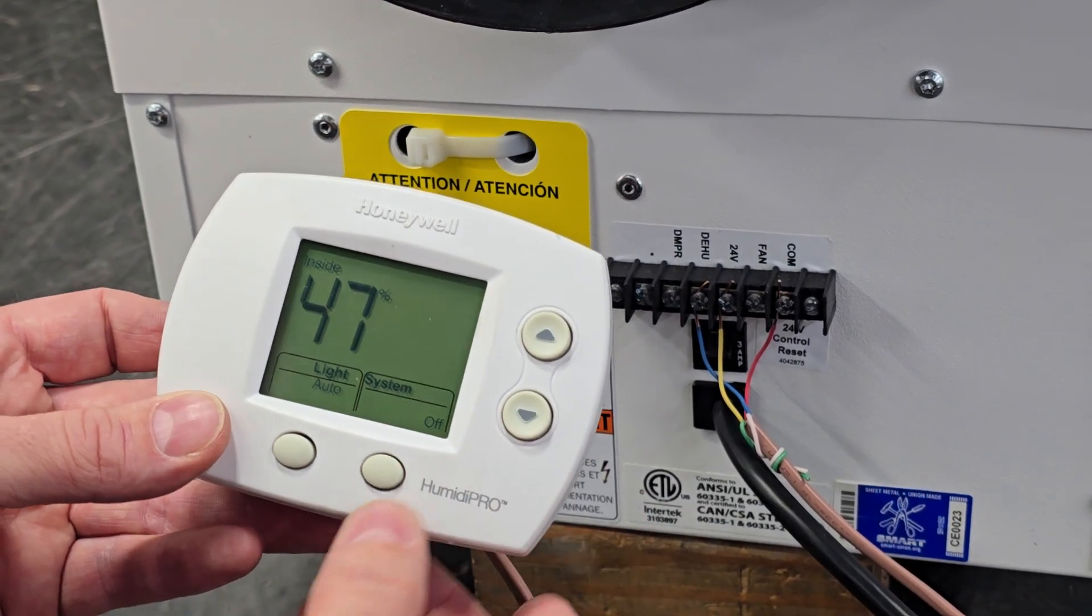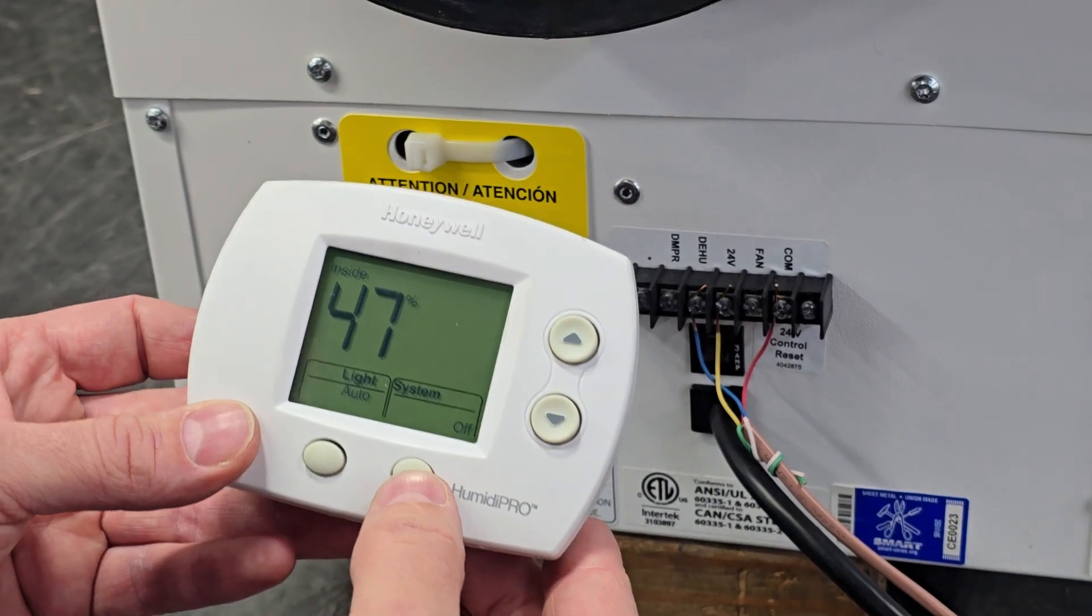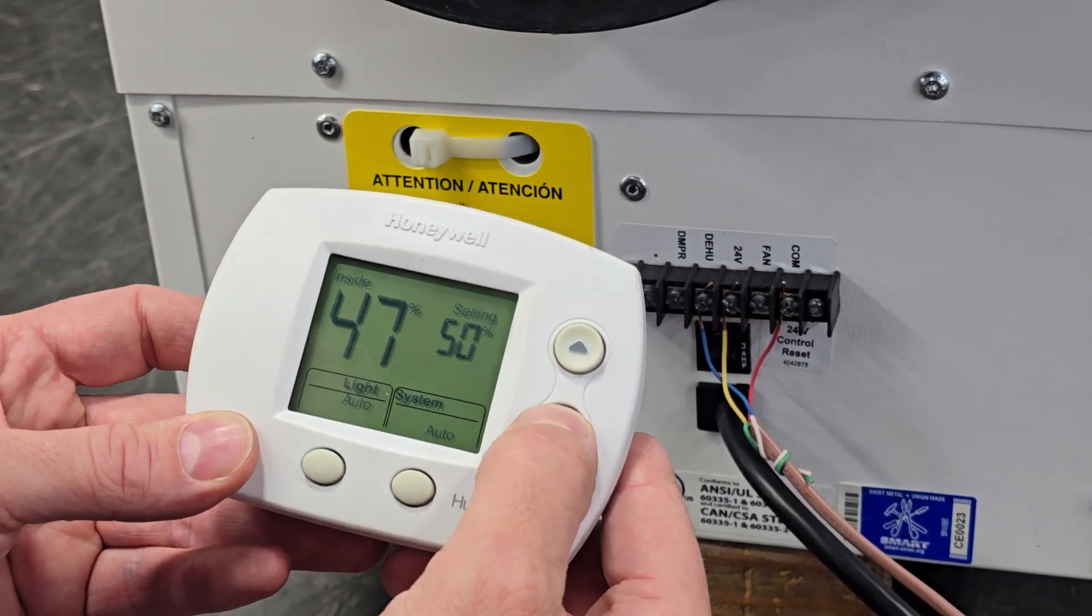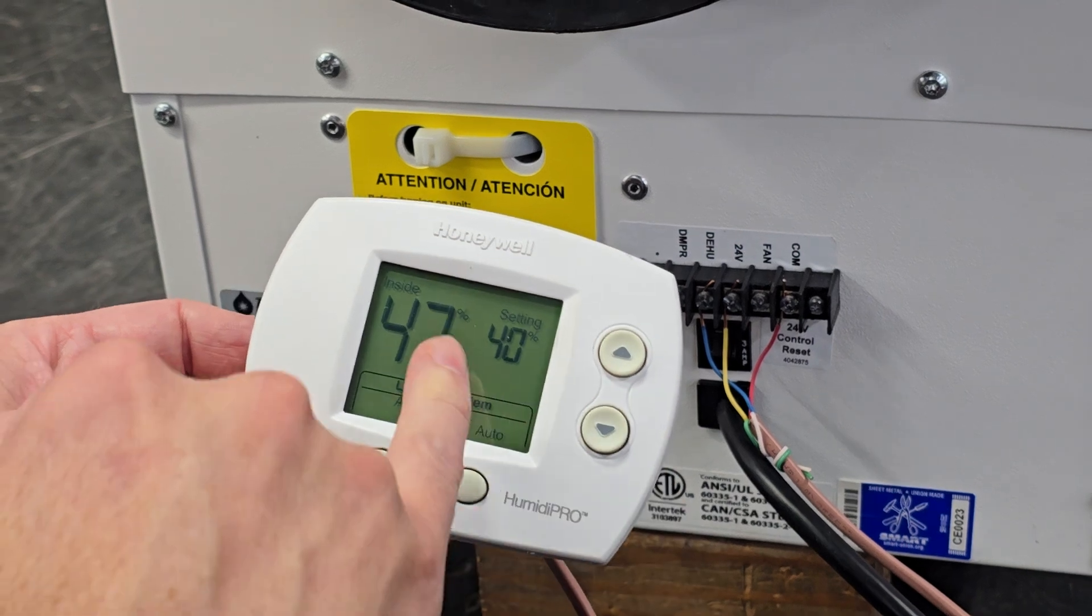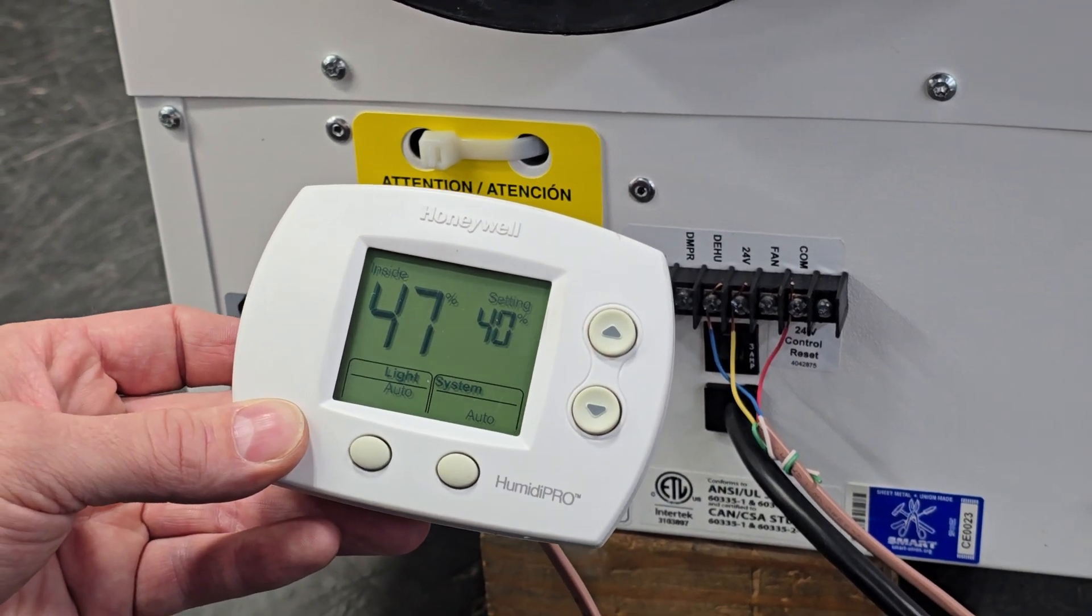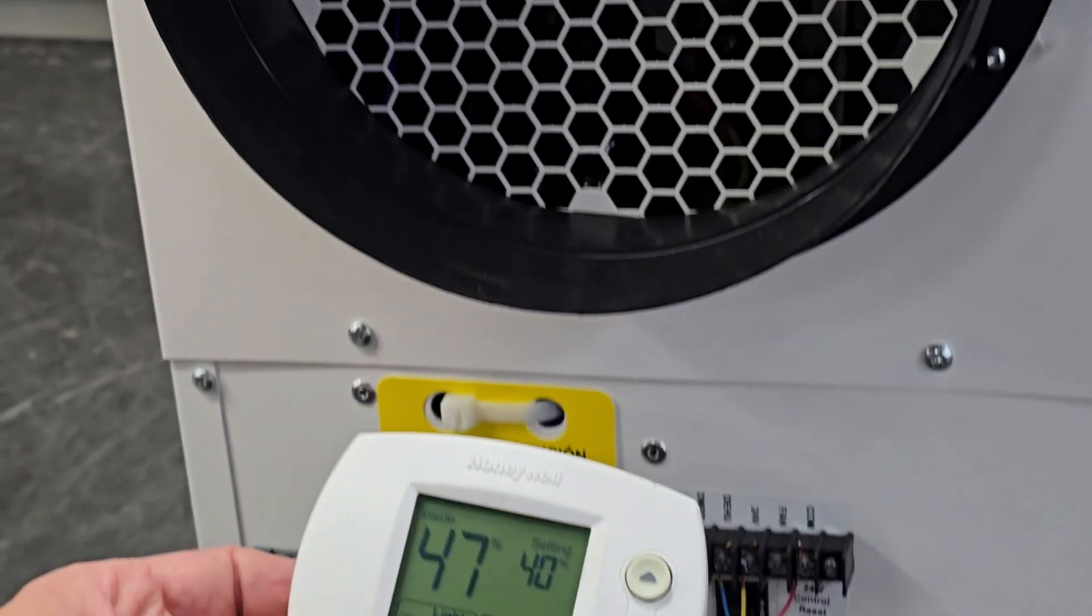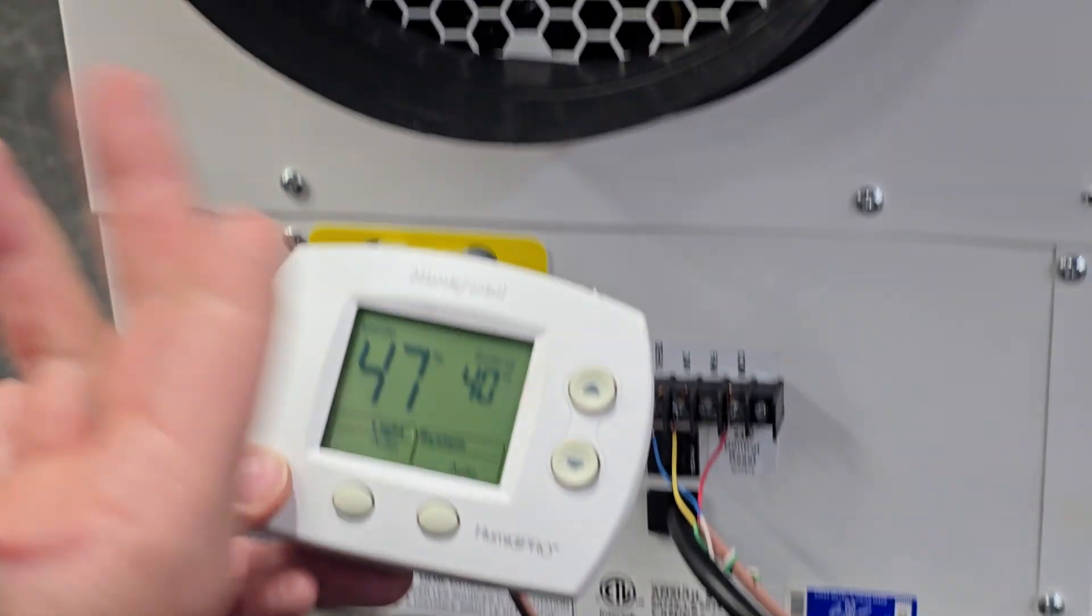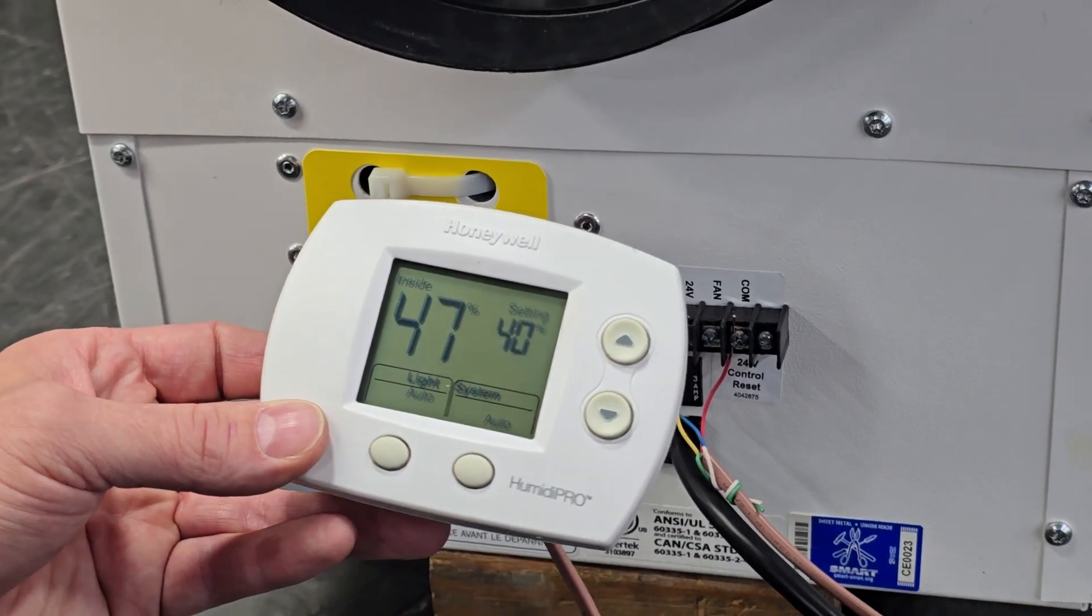And then to check the system to make sure it works, we'll just turn it to auto and then lower the setting below the set point. And then we'll wait for the dehumidifier to come on. We verified the dehumidifier came on, the wiring is complete.